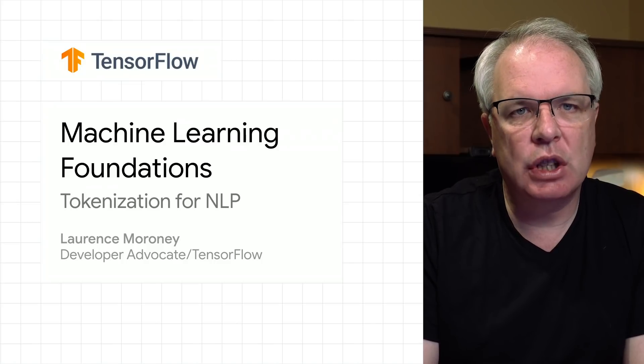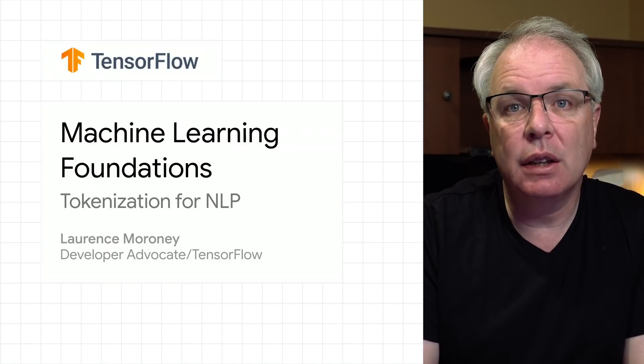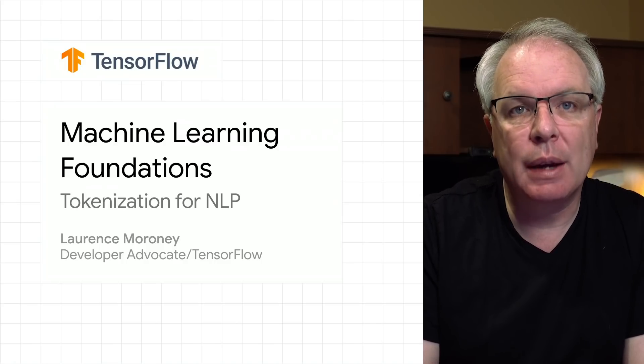We're now going to switch gears, and we'll take a look at natural language processing. In this video, we'll take a look at how a computer can represent language — words and sentences — in a numeric format that can then later be used to train neural networks. This process is called tokenization.